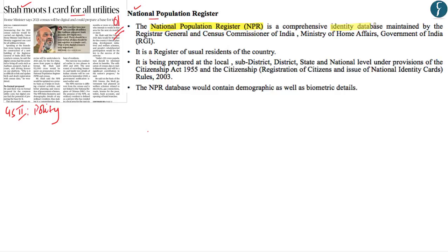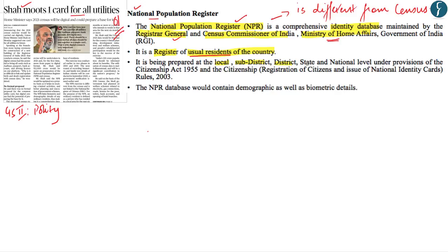The National Population Register or NPR is basically a comprehensive identity database maintained by the Registrar General and Census Commissioner of India under the Ministry of Home Affairs. Please remember the NPR is an initiative of the Ministry of Home Affairs, but also note that the NPR is different from the Census exercise. The NPR is basically a register of all the usual residents of India. It is being prepared at the local village level, sub-district, district, state, as well as national level, and draws its legality from the Citizenship Act of 1955 as well as the Citizenship Registration of Citizens and Issue of National Identity Card Rules of 2003.